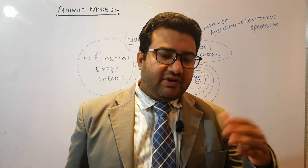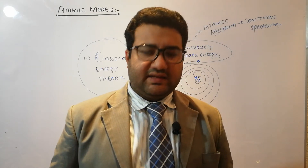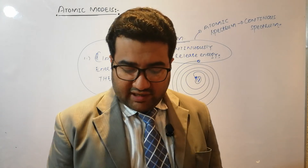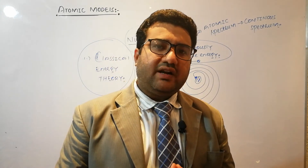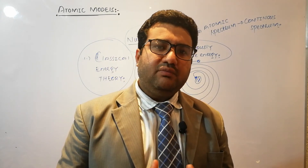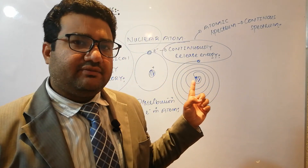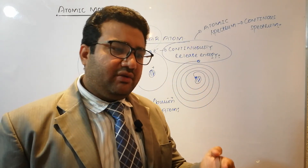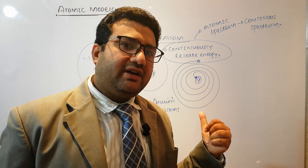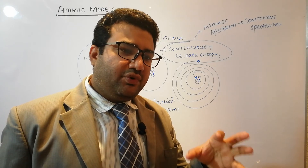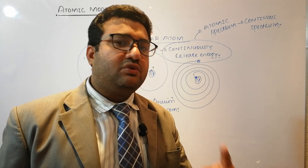We will discuss Bohr's model in the next lectures. Keep in mind that the first model was the plum pudding model and the second model is the nuclear atom — the plum pudding model of J.J. Thomson and the nuclear atom of Rutherford. Both these models are without neutrons.